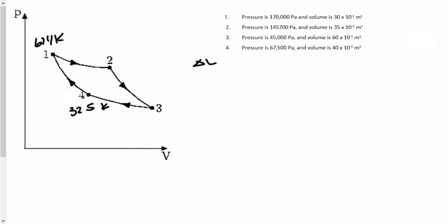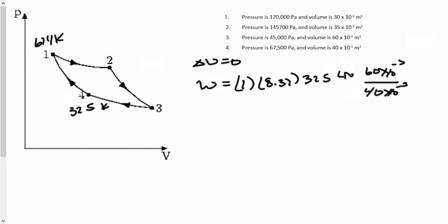Now going from 3 to 4, we do have another isotherm. So that means delta U is equal to 0. Therefore all of the work and heat flow are going to be equal and opposite to each other again. So then we use the equation work is equal to 1 because 1 mole times 8.31 times the temperature of 325 this time times the natural log of 60 times 10 to the minus 3 divided by 40 times 10 to the minus 3. Because we're starting at 60 ending at 40.